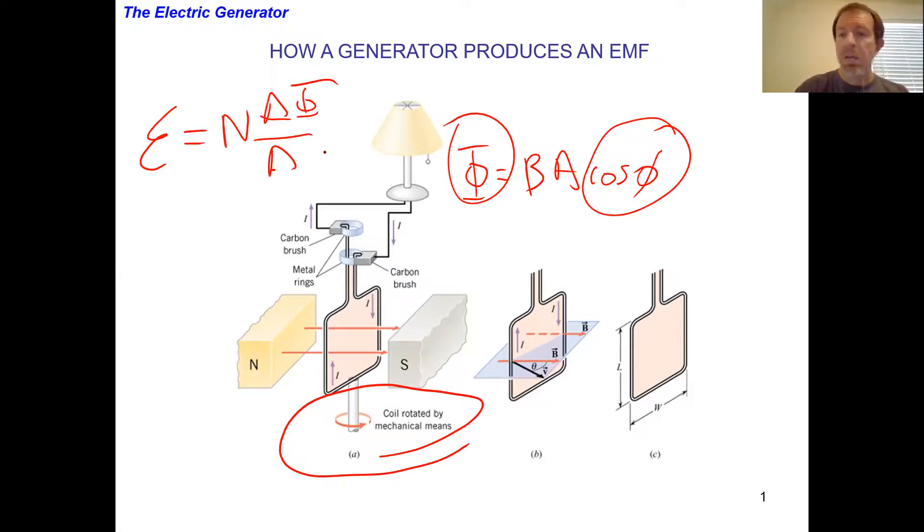Then what do I have? I've got an EMF, I've got a voltage that's being created, I've got a current that's running through that loop. That current gets used to transport power into our power lines. So this is called a generator—this is how our power actually gets produced.